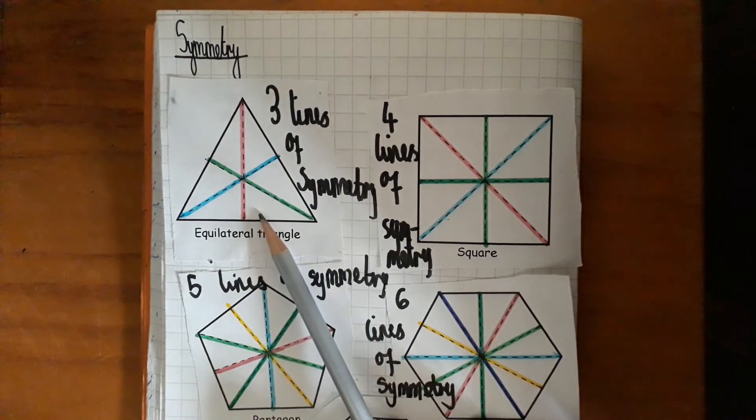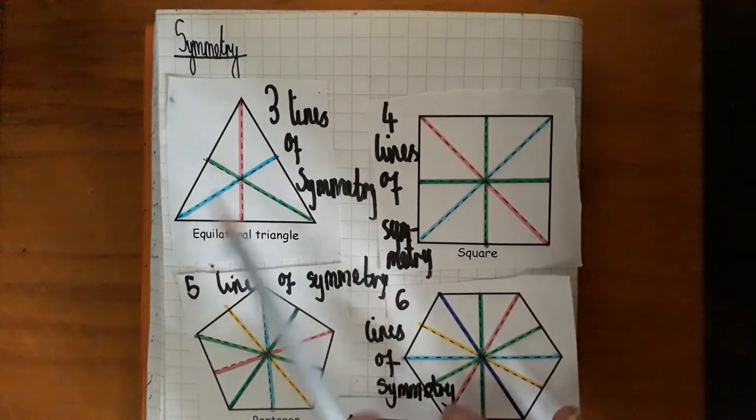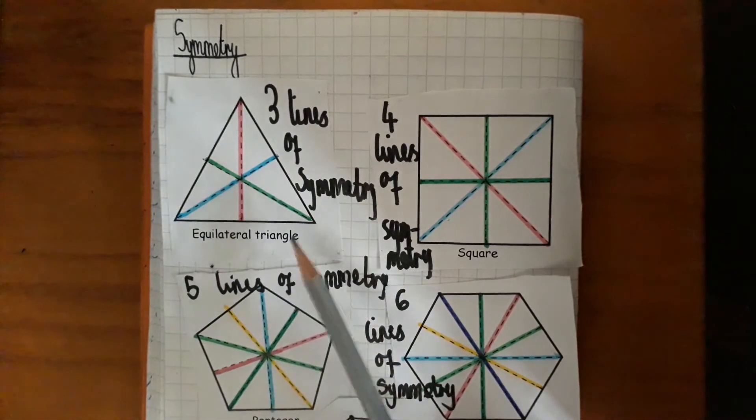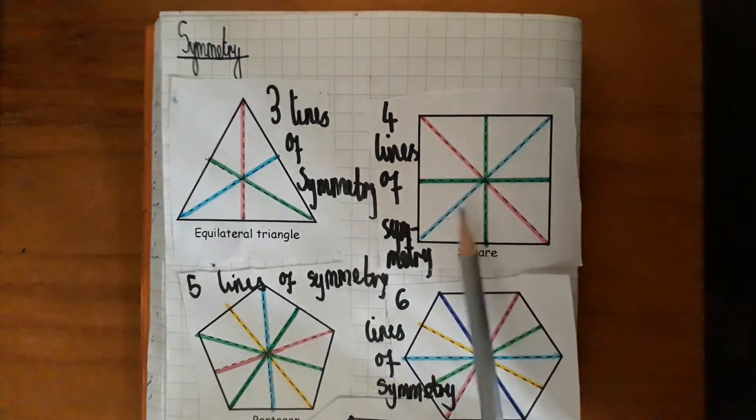Right, so our equilateral triangle has three sides, three lines of symmetry. Square, four sides, four lines of symmetry.